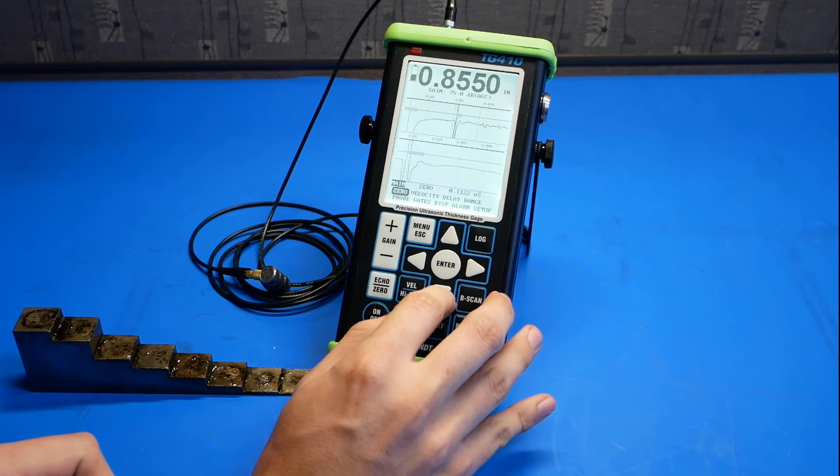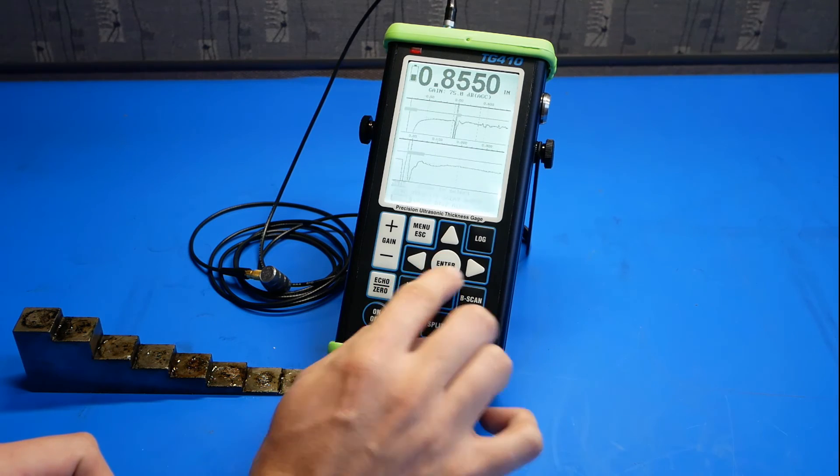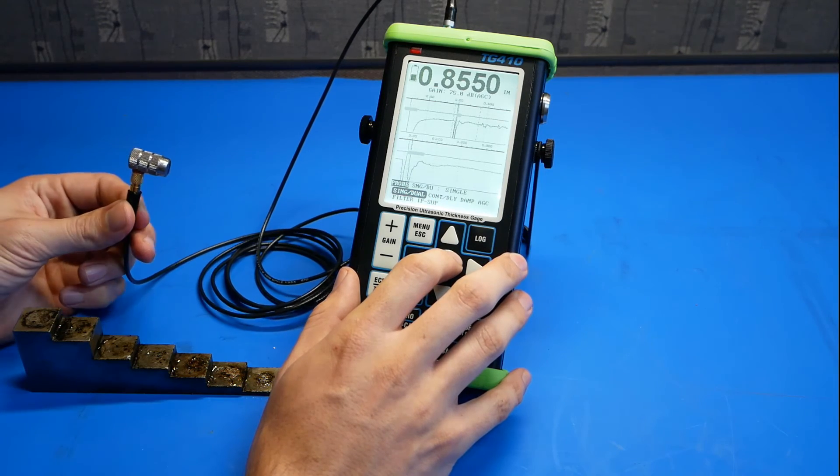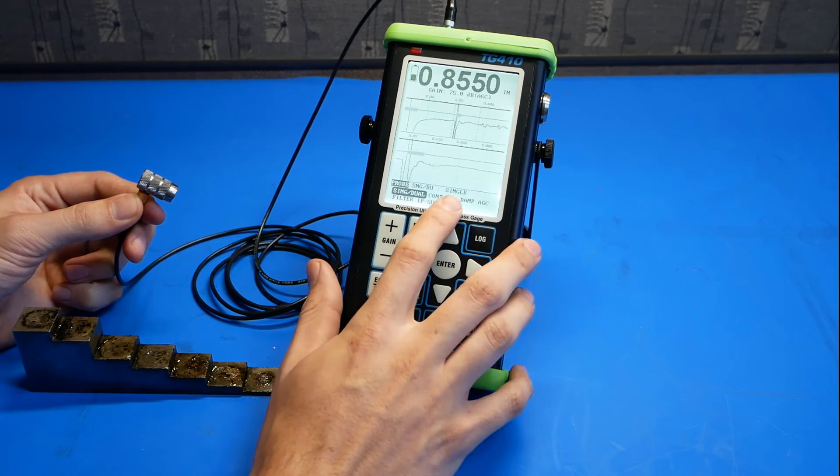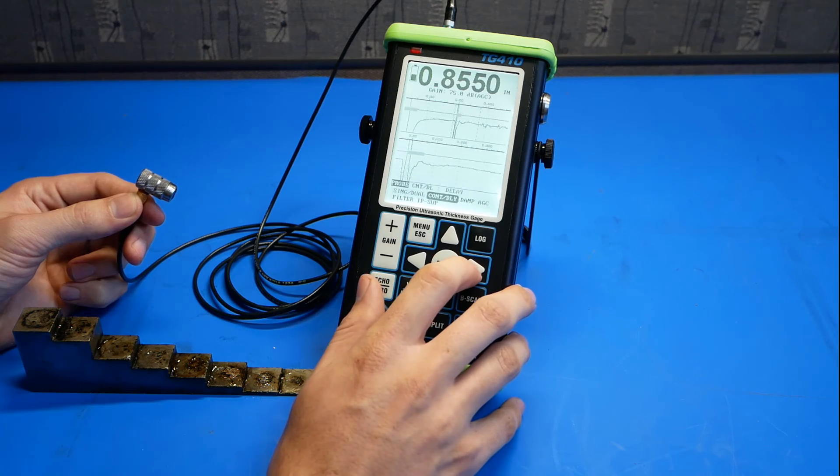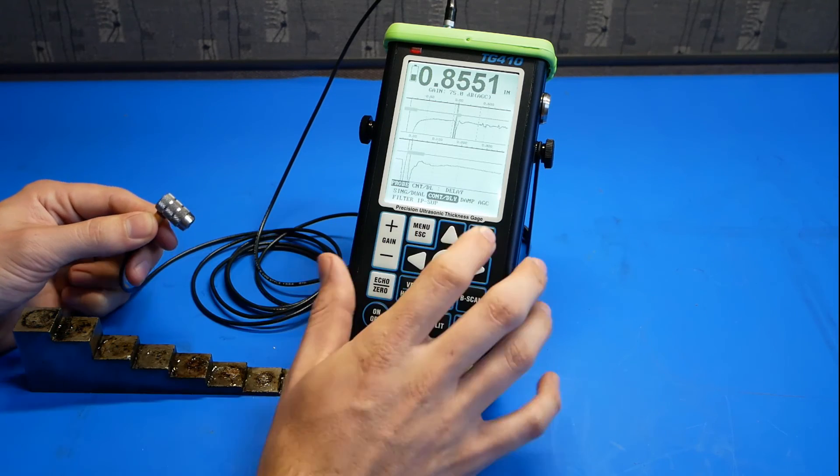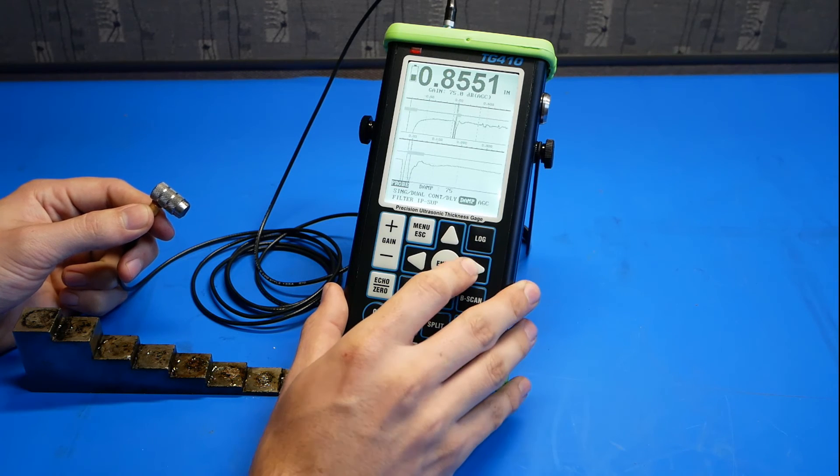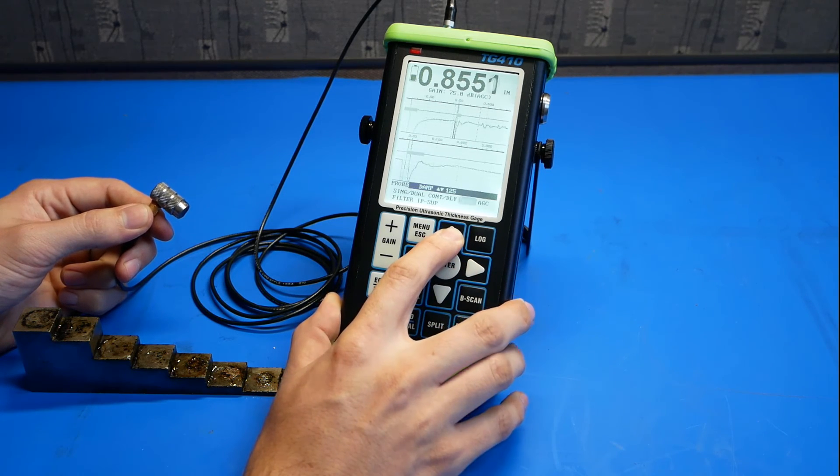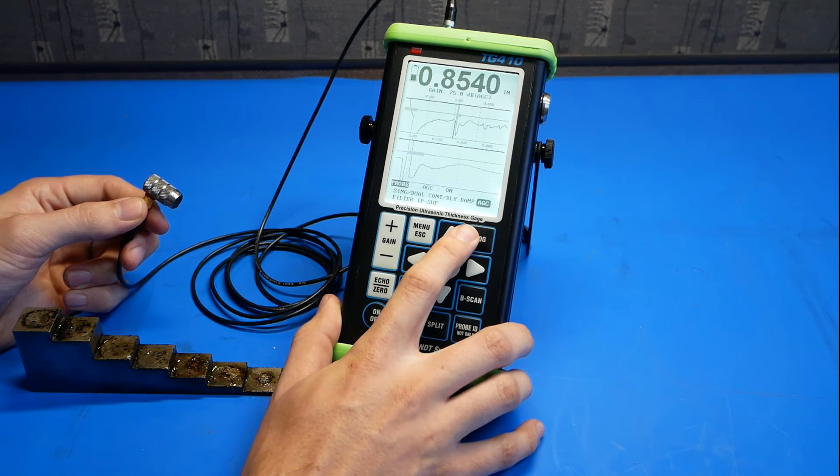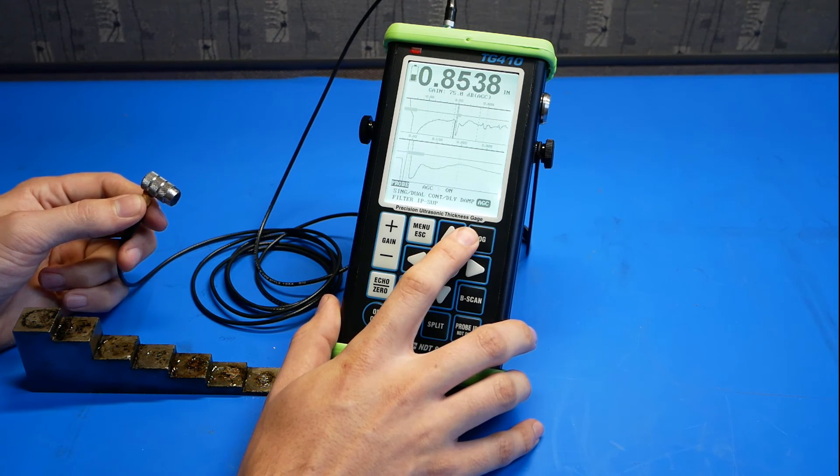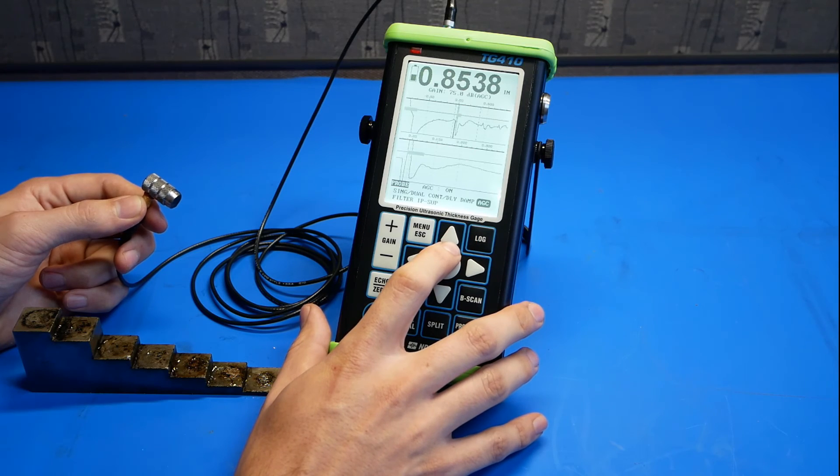To do this, we'll go to probe. Select single or dual element. Since the D11 is a single element delay, do single. Contact or delay. This is a delay line, so we'd select delay. Damping is fine tuning for the waveform. We have automatic gain control. This will boost the signal up until it reaches at least 80% screen height.